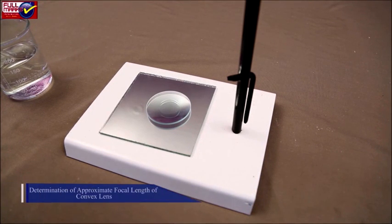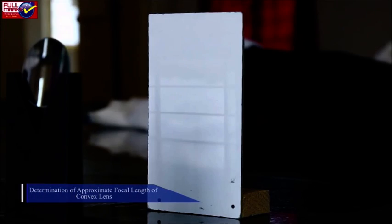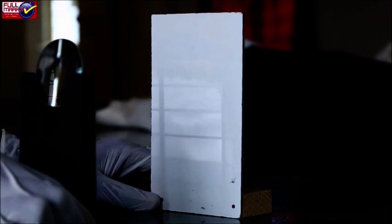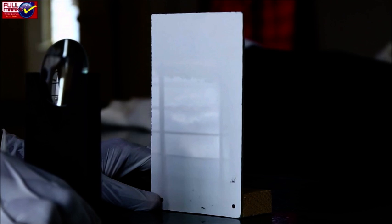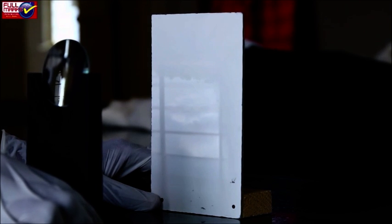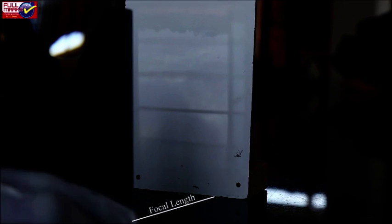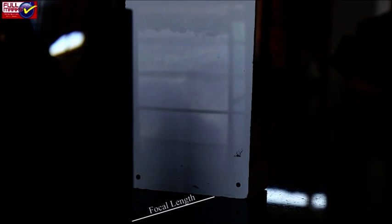Determination of approximate focal length of convex lens: Select a distant object which is in bright light, for example, a small tree or a tall tree or an electric pole. Keep the lens in such a way that you get an image of a distant object on the screen or wall. Measure the distance between the lens and the screen. This will give approximate focal length of the given convex lens.